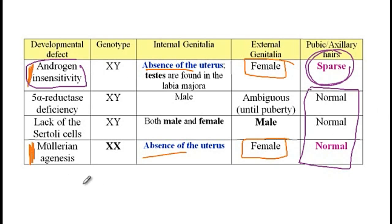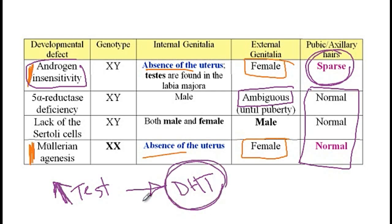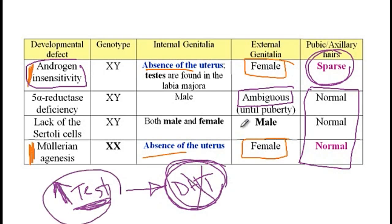5-alpha reductase is required for the conversion of testosterone into dihydrotestosterone, which acts on external genitalia to develop male characteristics. These patients will have ambiguous external genitalia until puberty, when testosterone levels increase and they start to develop male characteristics. DHT is a more potent form of testosterone, so once testosterone rises during puberty, it compensates for the DHT deficiency. Internal genitalia, since it is dependent on testosterone, is normal in these individuals.